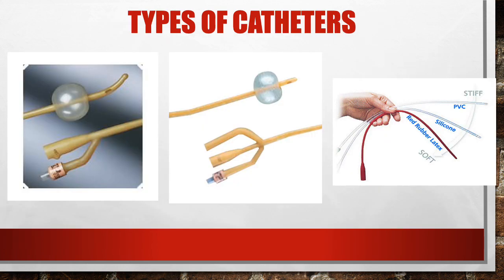There are a few different types of catheters. Normally a patient will have a straight-tip catheter, but there's also the coude catheter, which has a curved tip. This is used in older patients with prostate issues or abnormal anatomy — usually male patients, though it can be used in females. The curved tip helps get around the prostate or other obstructions.